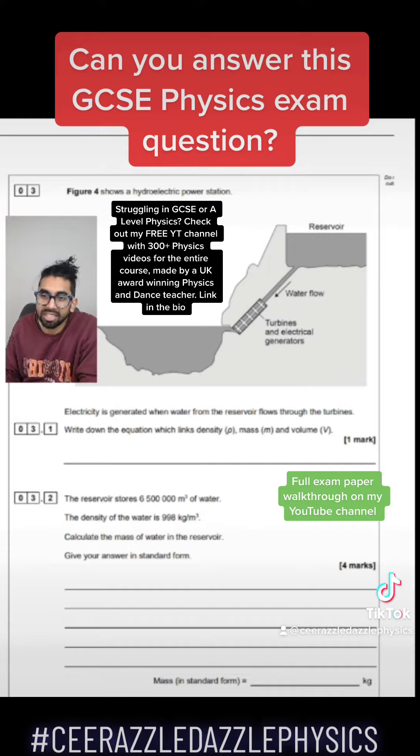Write down the equation that links density, mass and volume. Hopefully you can remember that density is equal to the mass divided by the volume. Yes, ρ = m/v. That's one mark over here.